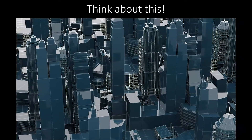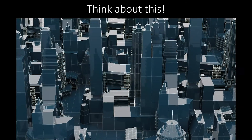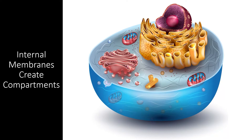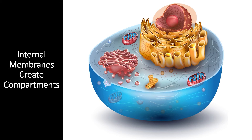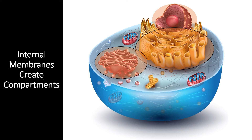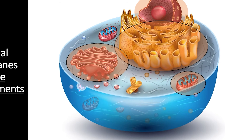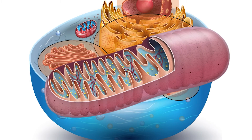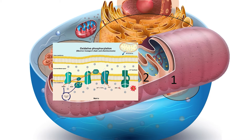Try to remember the benefits of compartmentalization as we continue through this lesson. In eukaryotic cells, compartmentalization is created by the use of internal membranes. These membranes surround the nucleus, create the folds of the endoplasmic reticulum and Golgi complex, and surround organelles like chloroplasts and mitochondria. For example, let's consider a mitochondrion. A mitochondrion is an organelle surrounded by not one but two membranes. The reactions taking place in the mitochondrion are breaking down substances to create ATP energy through catabolic reactions.